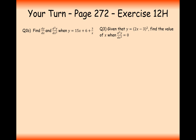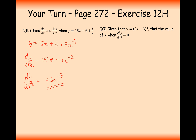That's all there is to it. Pause the video and see if you can do it. For question 1b, rearrange to a power of x: that gives plus 3x to the minus 1. The first differential is going to be 15, the constant 6 differentiates to 0 and disappears, giving minus 3x to the minus 2. The second derivative is then 0 plus 6x to the minus 3.